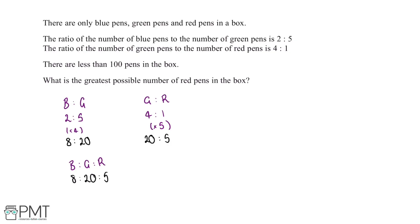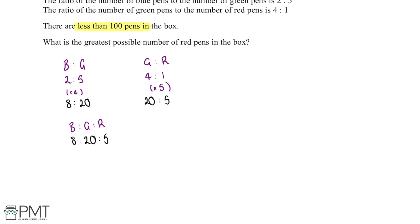So we've been told in the question there are less than 100 pens in the box, so we want to work out what the maximum number of pens we can put in the box with this ratio. So what we can do is add these three values together and 8 plus 20 plus 5 gives us 33.